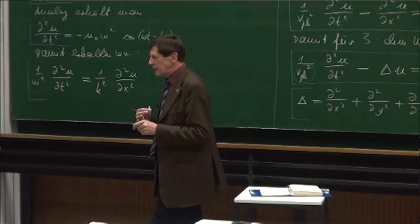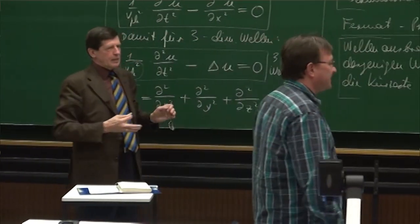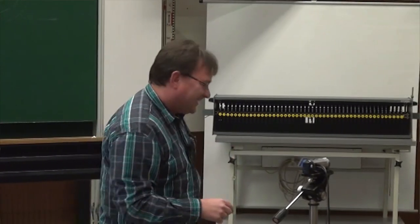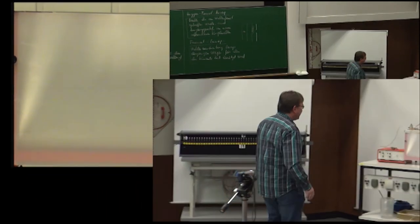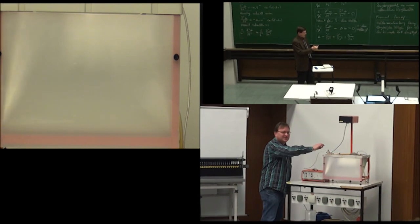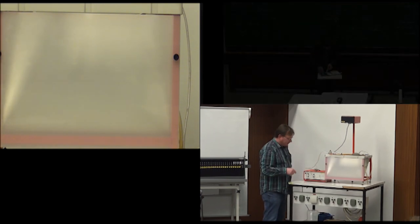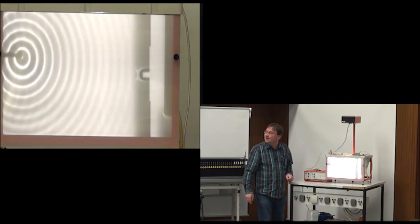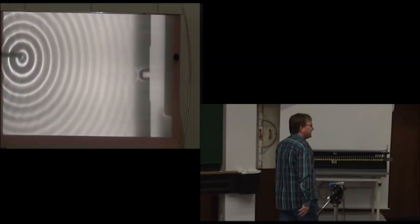Und die letzten Minuten bitte ich Sie, dass Sie jetzt das anschauen, was wir an Interferenz von verschiedenen Wellen und dann diesem Fresnel-Prinzip noch zeigen können. Die Wellenwanne haben Sie, glaube ich, in der ersten Vorlesung kurz gesehen. Nichts anderes als ein Behälter mit einem dünnen Wasserfilm. Über den Spiegel wird das Bild auf die Mattscheibe sozusagen projiziert. Wenn ich zum Beispiel einschalte, sehen wir eine einzelne punktförmige Quelle und wie sich von dieser Quelle eine Kreiswelle in zwei Dimensionen ausbildet.